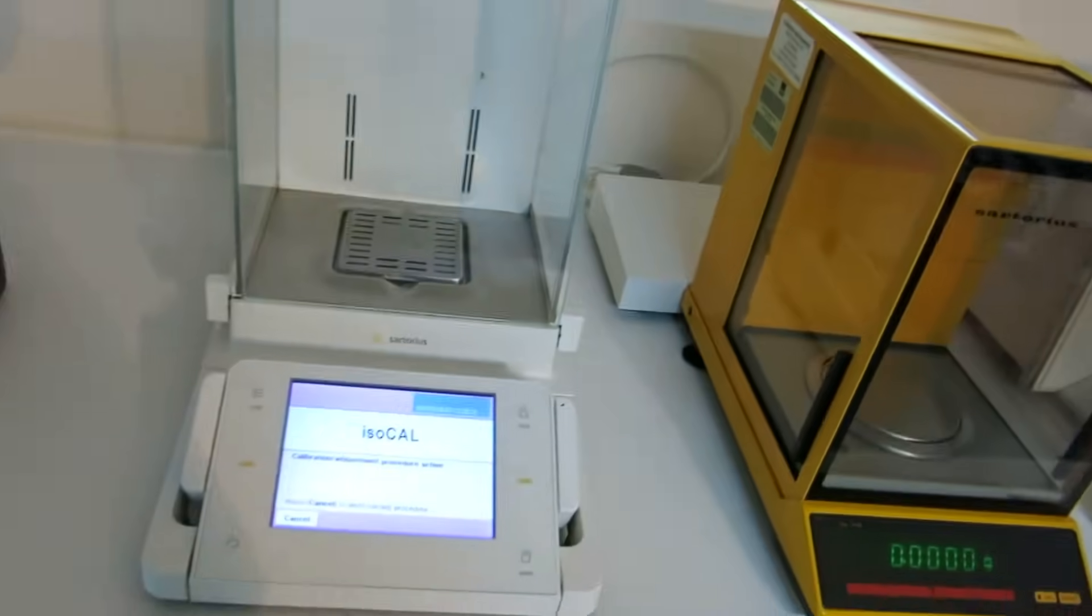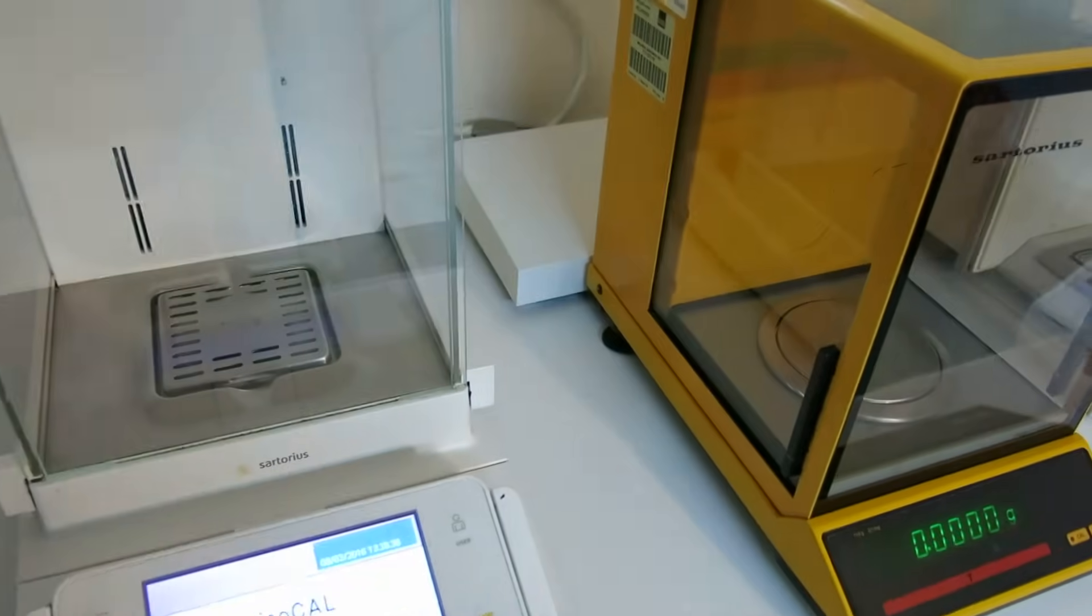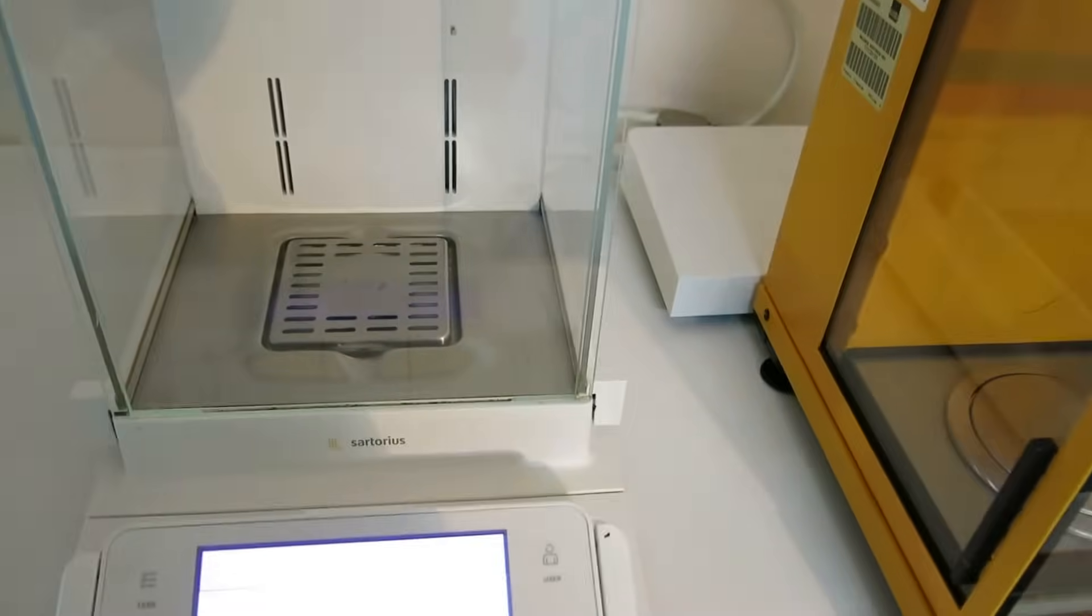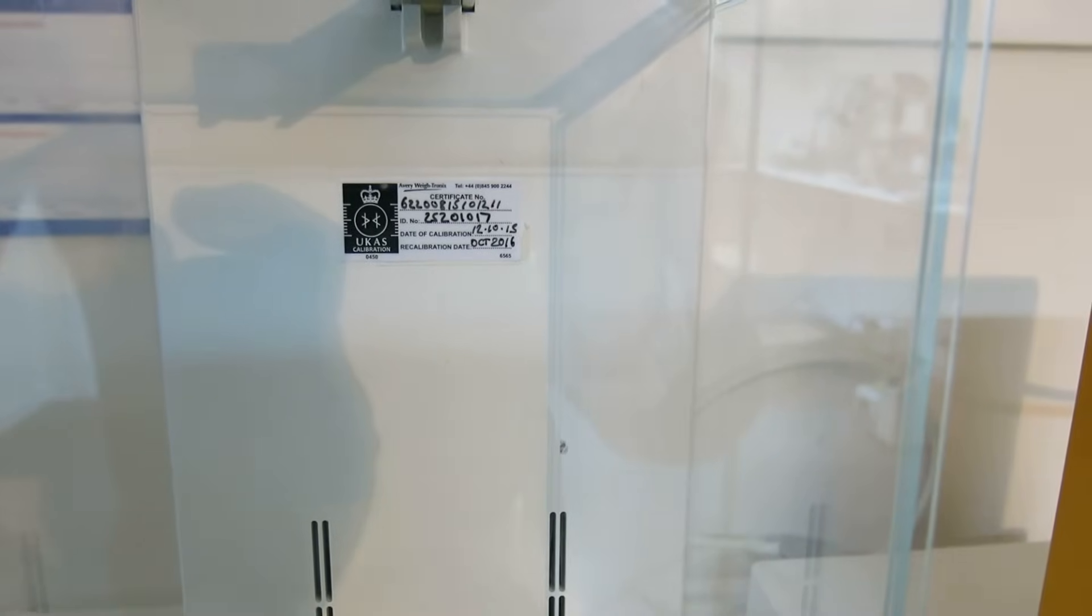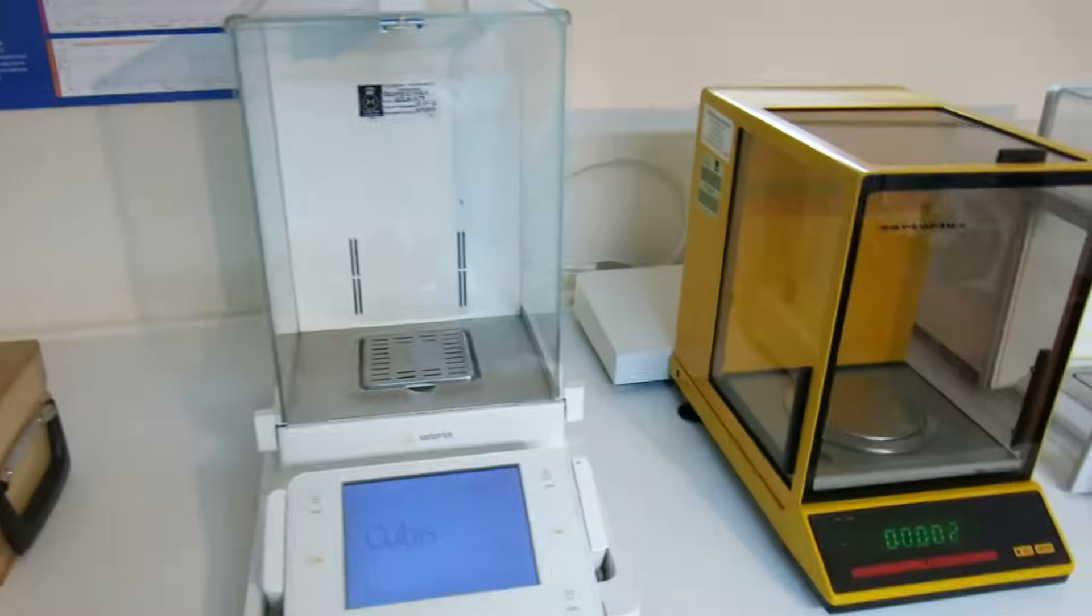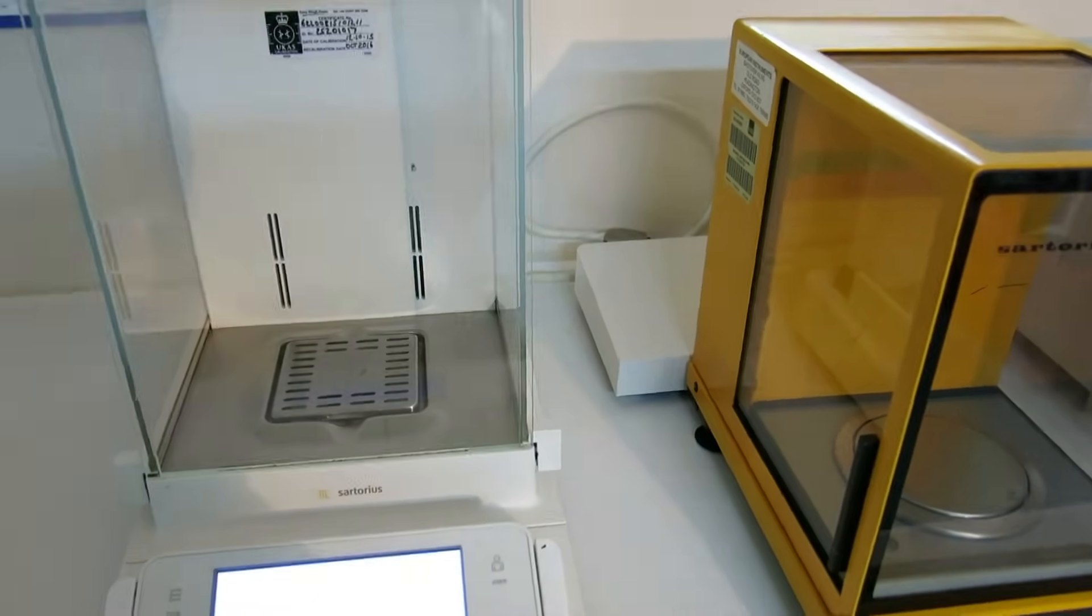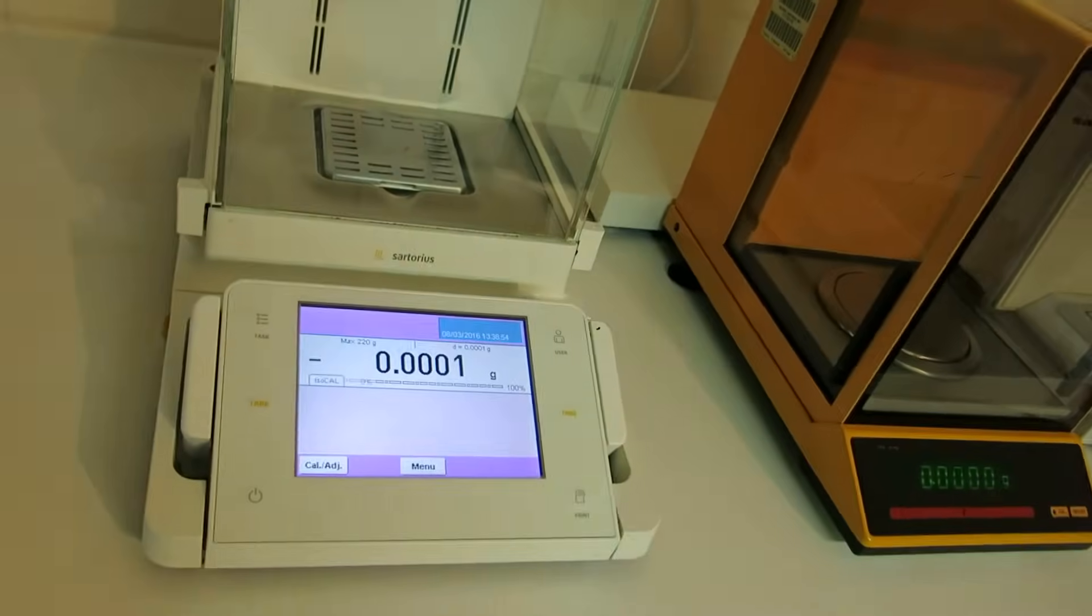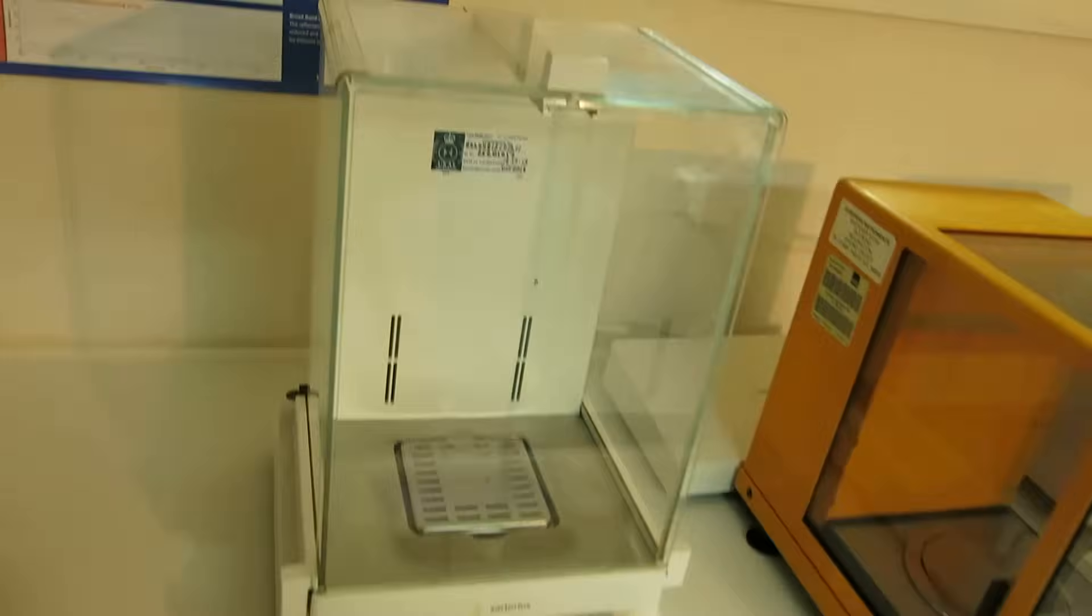Then moving on to the Sartorius 4 decimal place balance that we've got here. This is a rather nice balance. It's got a variety of different features. It's a Sartorius. It's in calibration at the moment. The calibration expires in October 2016. It's a Cubis. It weighs up to 220g. We have got photographs on the website that you can see. So we'll just put this one into mode now. Hopefully you'll be able to see it start up there. So we'll just tare it. You can see that. The condition of it is very good.